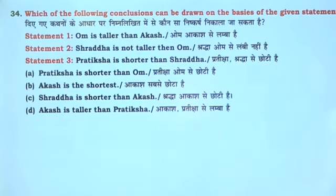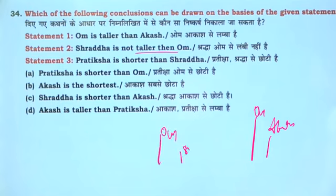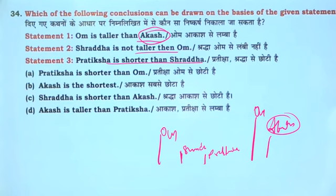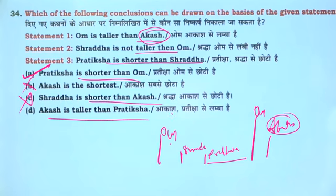The last statement is: Om is taller than Akash. Shraddha is not taller than Om. Shraddha is taller than Om — and we don't know about Akash. Akash is shorter than Om. Akash is the shortest. Akash is taller than Prateksha — Akash and Prateksha: Akash is better than OK.